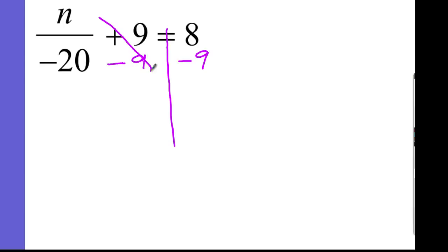This cancels out. Next is you bring this to the bottom and divide by negative 20. We got rid of the nine. Eight minus nine is negative one.